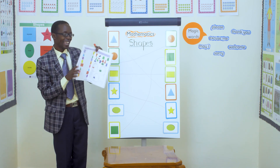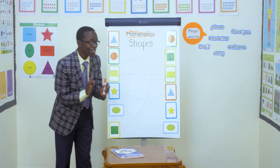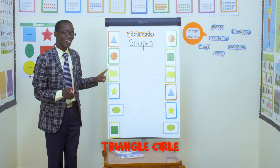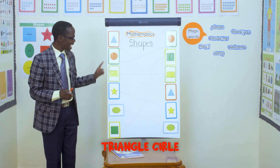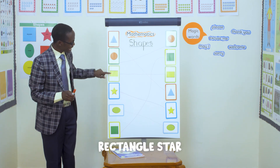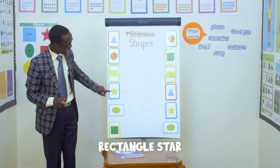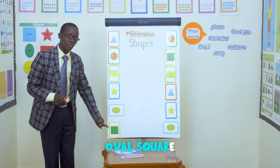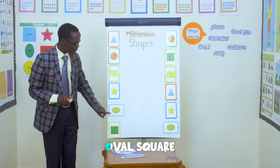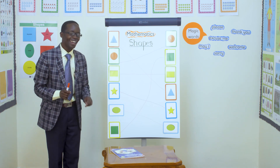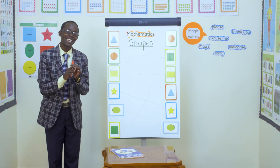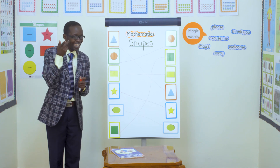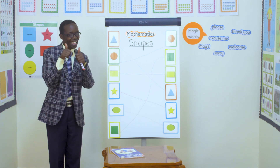Thank you so much. Can we conclude our lesson by singing: triangle, circle, triangle, circle, rectangle, star, rectangle, star. Oval, square, oval, square. I love you so much. Bye. See each other next time. I love you.